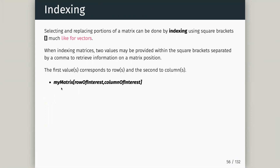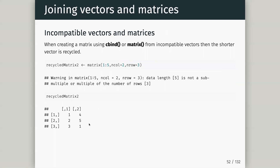We saw how we could subset a vector using square brackets and indices. In matrices it's very similar except we need to know what column and row we want. We use square brackets with a comma: before the comma is the row of interest, after the comma is the column. We can already see that in the matrix printout — comma one for the first column, one comma nothing for the first row.